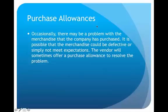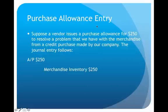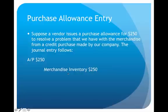So that we will continue to buy from them in the future. To see an example of a purchase allowance: we have a vendor who has issued a $250 purchase allowance to resolve a problem with the merchandise. The way this would be recorded, I would debit Accounts Payable $250 and credit Merchandise Inventory $250. This reduces the liability and also reduces the cost of my inventory — that would be the appropriate way to record a purchase allowance.